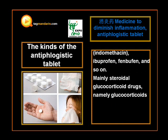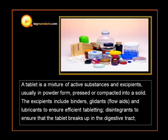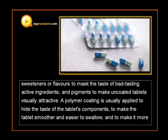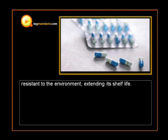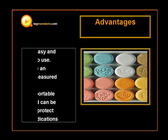A tablet is a mixture of active substances and excipients, usually pressed or compacted into a solid. The excipients include binders, fillers, and lubricants to ensure efficient tableting; disintegrants to ensure that the tablet breaks up in the digestive tract; sweeteners or flavors to mask the taste of bitter active ingredients; and pigments to make uncoated tablets visually attractive. A polymer coating is usually applied to hide the taste of the tablet's components, to make the tablet smoother and easier to swallow, and to make it more resistant to the environment, extending its shelf life.